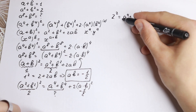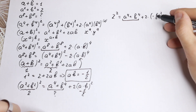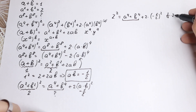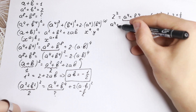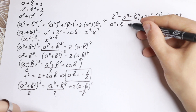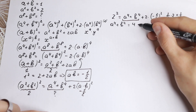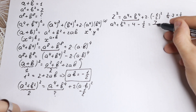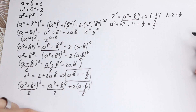Solving: a to the fourth plus b to the fourth equals 2 squared minus 2 times (minus one half) squared. That is 4 minus 2 times one quarter, which gives 4 minus one half, equal to seven halves. So a to the fourth plus b to the fourth equals 7/2.